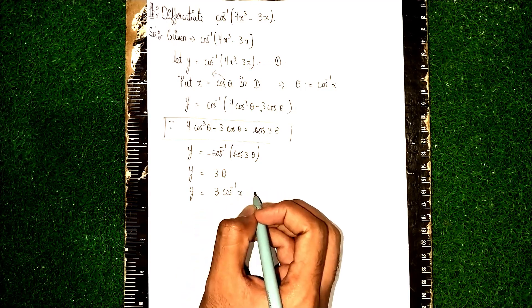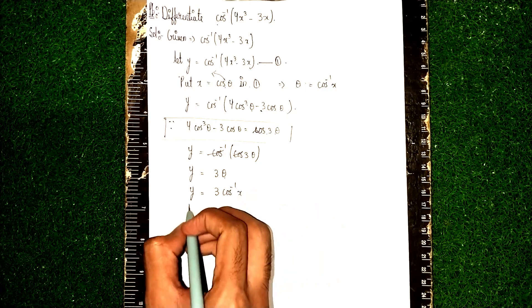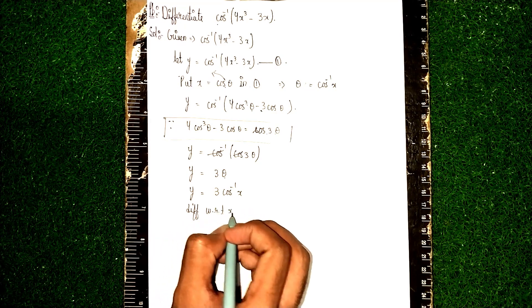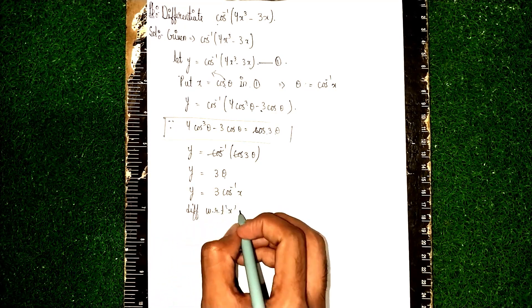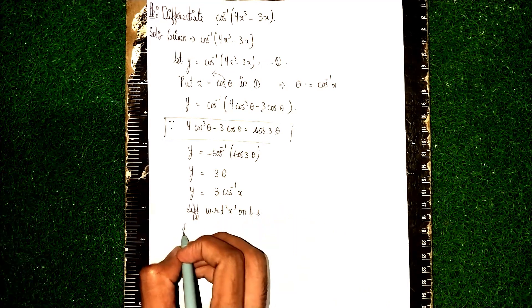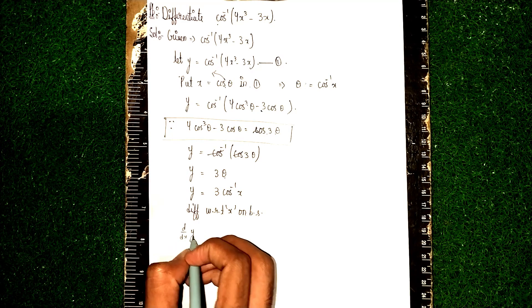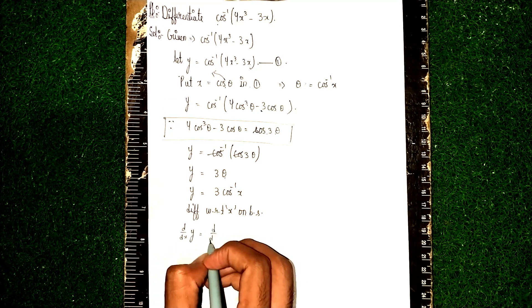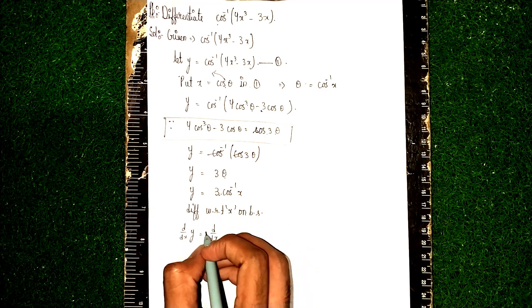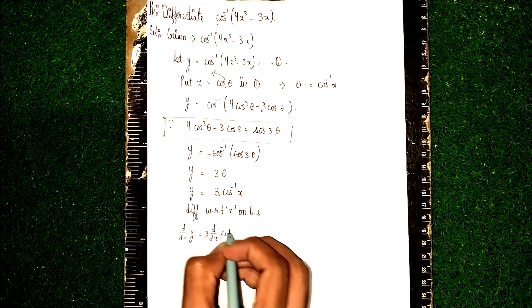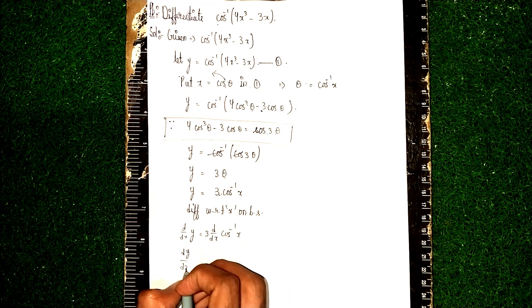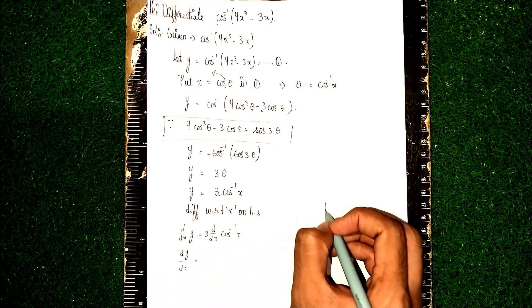Now here, differentiate with respect to x on both sides. So it becomes d/dx of y equal to d/dx of - now this 3 will come outside - 3 cos inverse x.